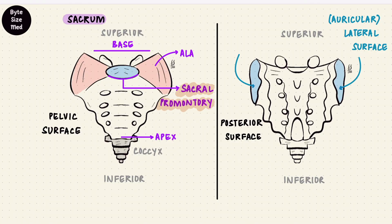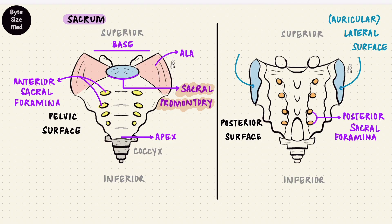The pelvic surface has foramina — openings called the anterior sacral foramina — while the posterior surface has posterior sacral foramina. These are for spinal nerves to leave the vertebral column, which usually happens between vertebrae and other parts of the vertebral column, but here those vertebrae have fused and that's why they look like this.